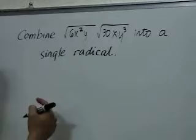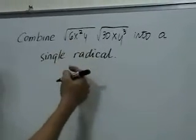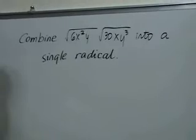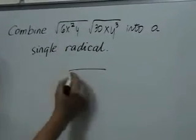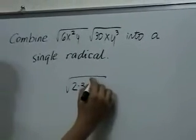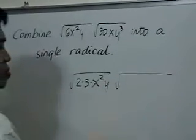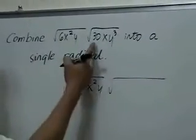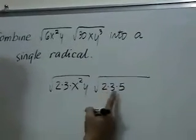First, we will look for the prime factors of 6x squared y and do the same for 30xy cubed. So we have square root of 2 times 3, that's for 6, times x squared y and the square root of 2 times 3 times 5, this is your 30, times xy cubed.